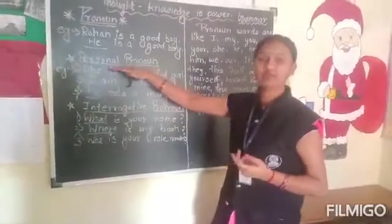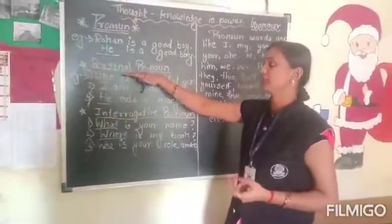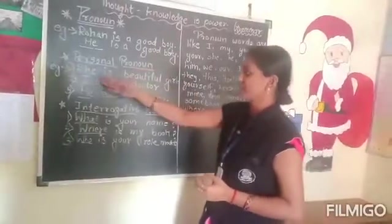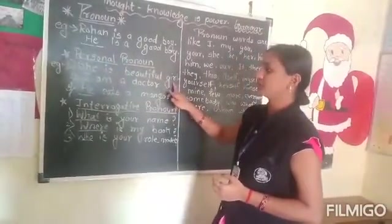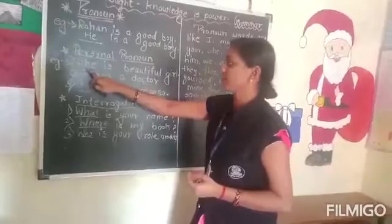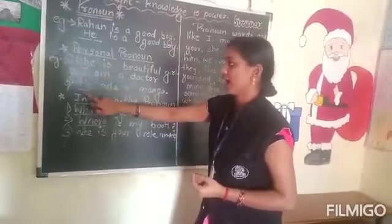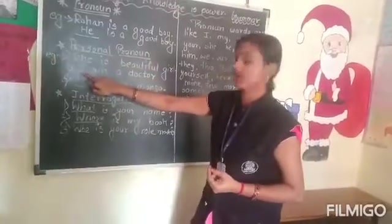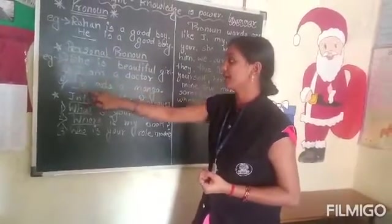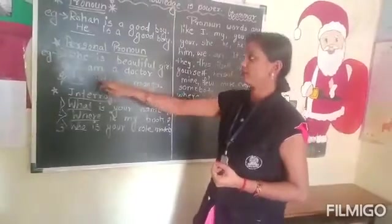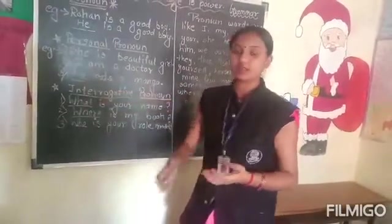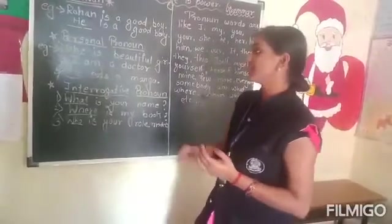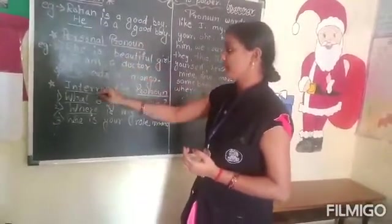Personal Pronoun — what is the meaning of Personal Pronoun? A Personal Pronoun word is used as a substitute for a person's name. For example, 'She is a beautiful girl' — the Personal Pronoun is 'she'. Second example: 'I am a doctor' — the Personal Pronoun is 'I'. Third: 'He is a good boy' — the Personal Pronoun is 'he'. Personal Pronouns include: he, she, I, her, him.